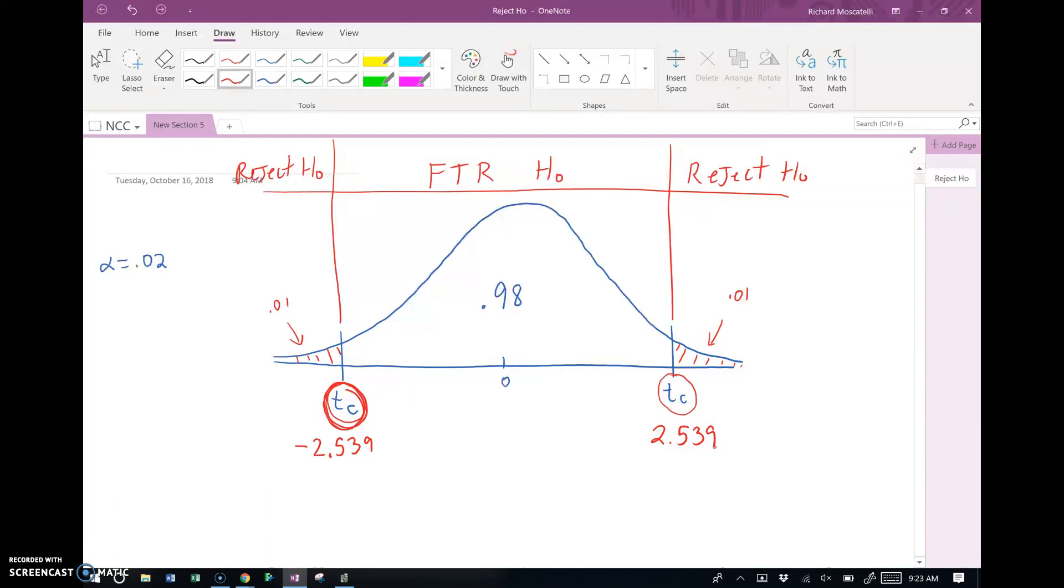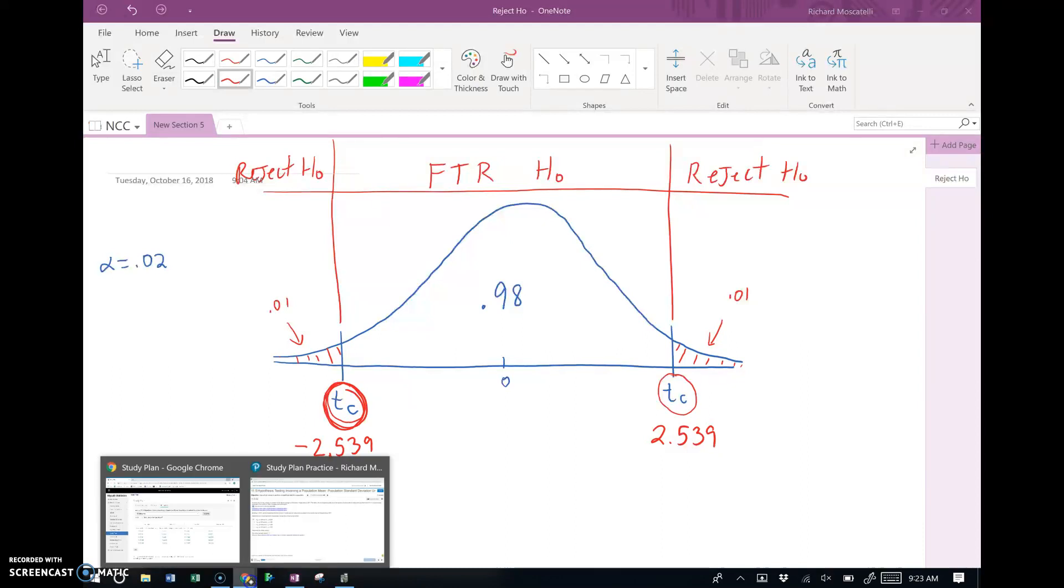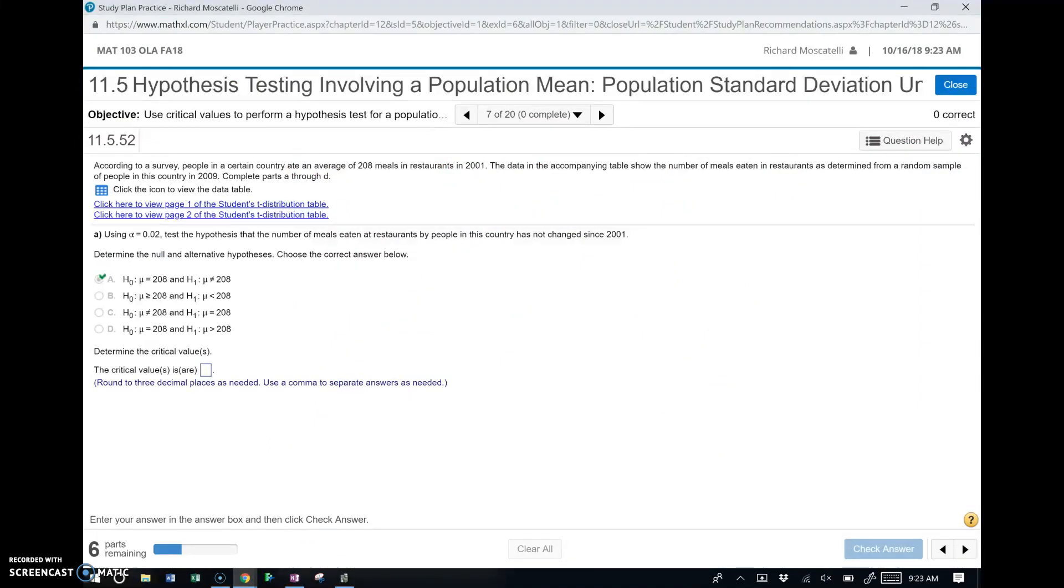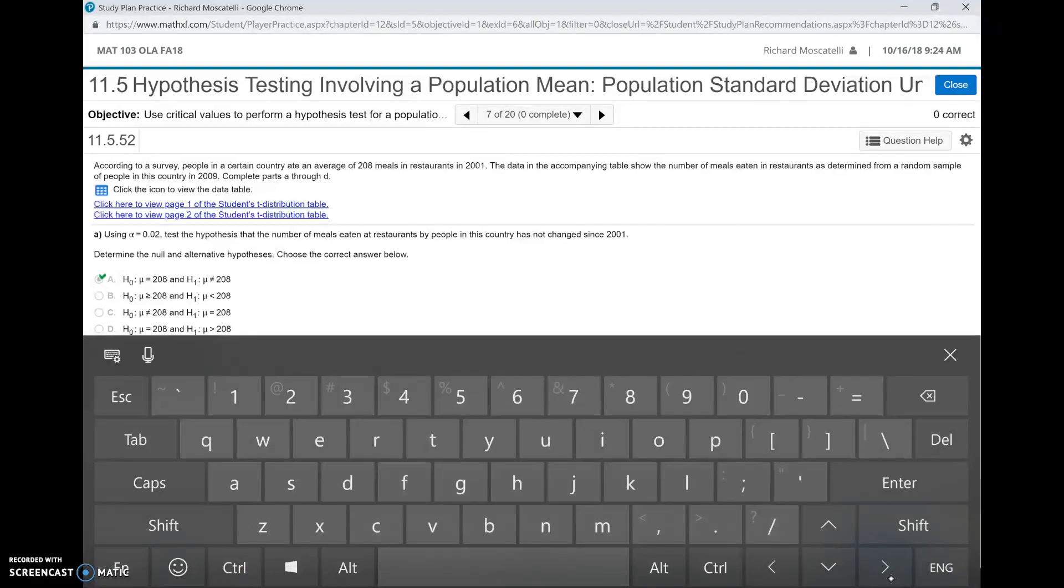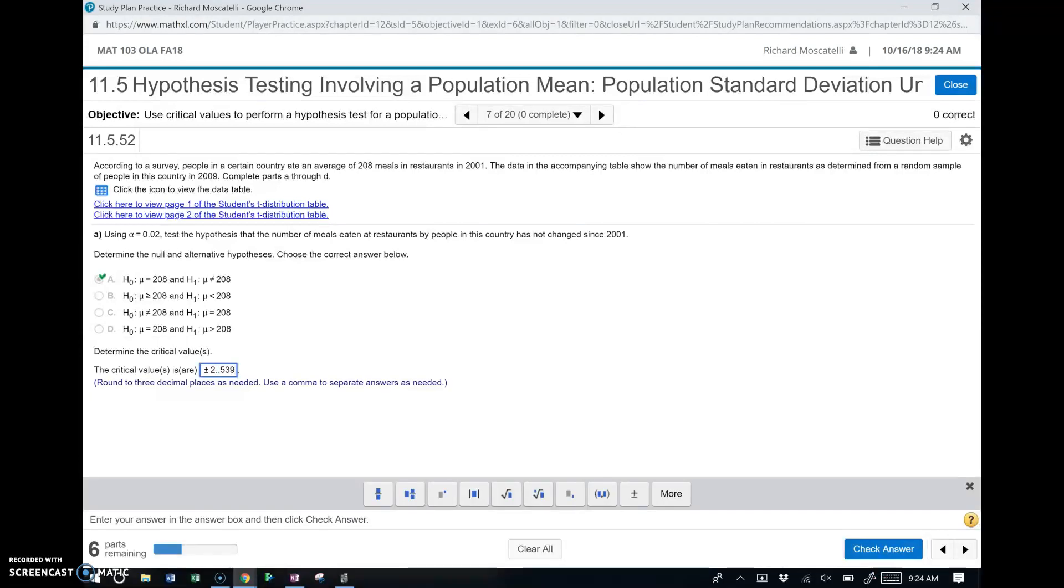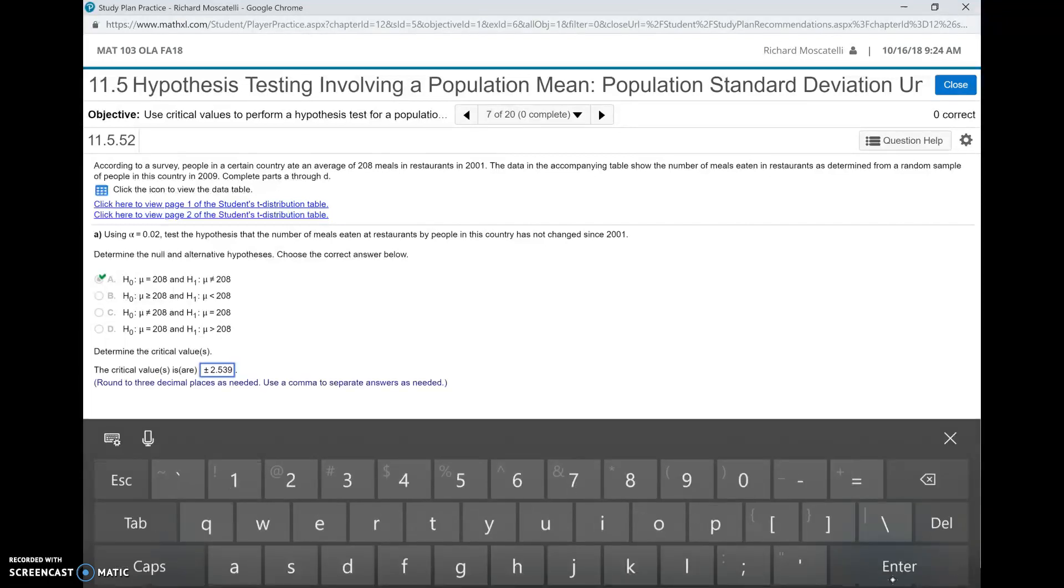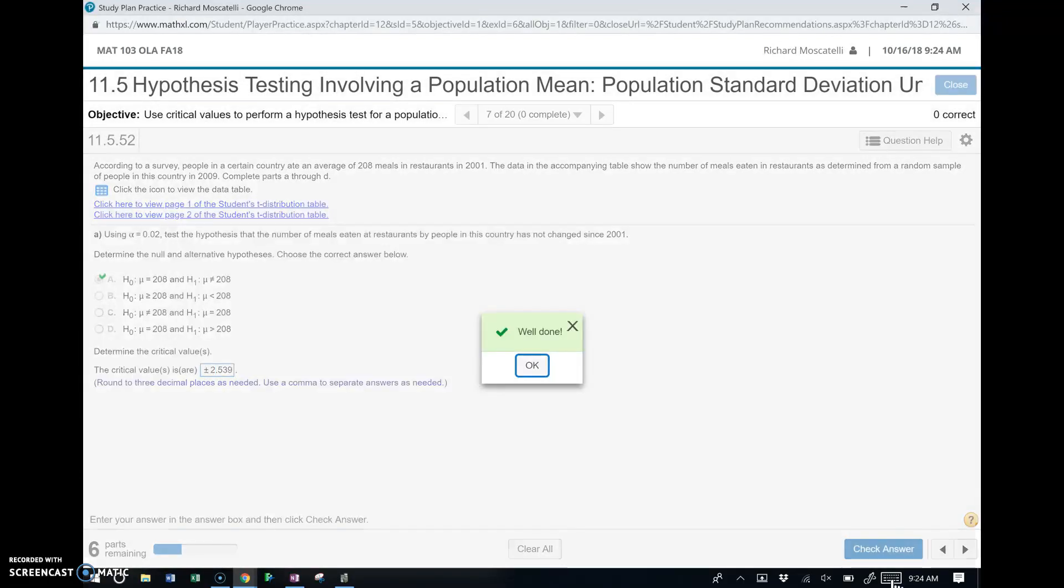Now, JMP will also give those to you. So if you don't feel like doing all this work with the picture and going to the calculator or a table, JMP's just going to hand you that anyway when we import the data in and run the hypothesis test. I'm grabbing this number now only because it's asking me for it, but the reality is we could just go ahead, open JMP, and run the test and get all the info right out of it. But let's go ahead and pop that in there. So that would be plus and minus. Notice there's a symbol for plus minus here in MyMathLab. And it tells me to round to three decimal places. That's 2.539. Let's check our answer. Well done.